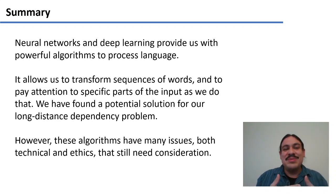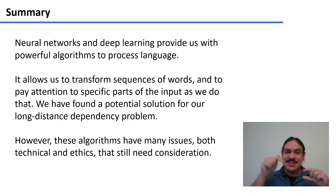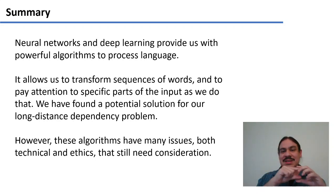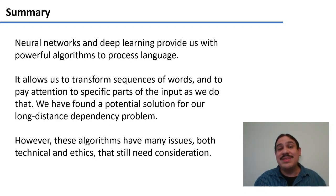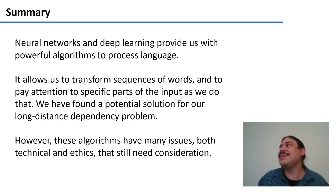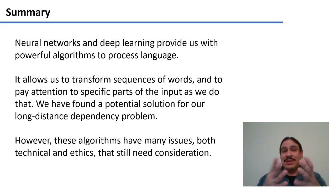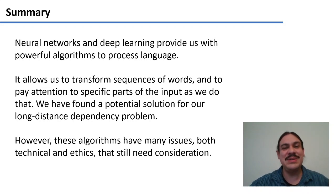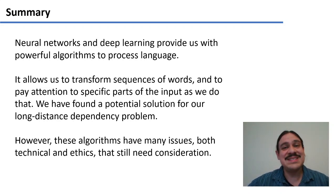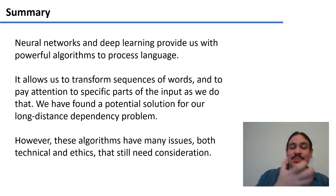As a big summary: we've been talking about neural networks and deep learning. They provide us with very powerful algorithms that can transform sequences into other sequences and allow us to pay specific attention to certain parts of sequences. Because of this combination — transformation of sequences and focused attention — we have found a potential solution to the long-distance dependency problem, and we finally have something that might help us to really model human language. However, there are still many issues to solve, and that's where we need you to help us continue with the research. Next week, we're going to switch gears and look at a different aspect of natural language: parsing sentences so that your phone can understand that you wanted to play a song.